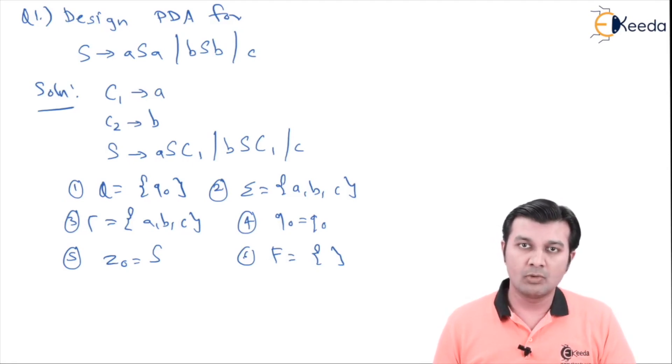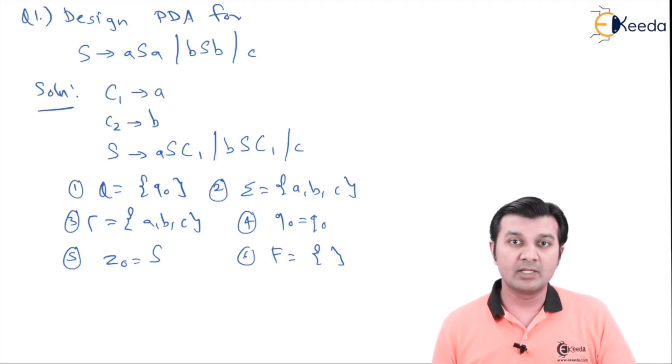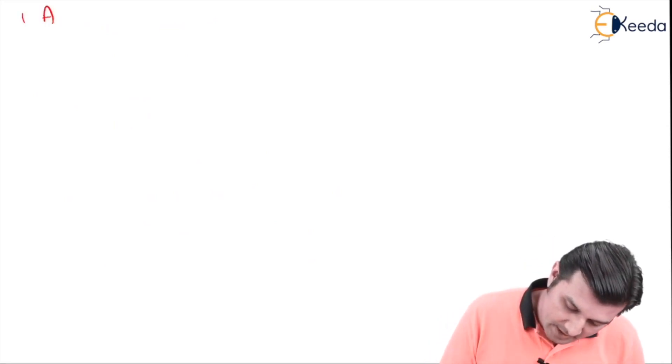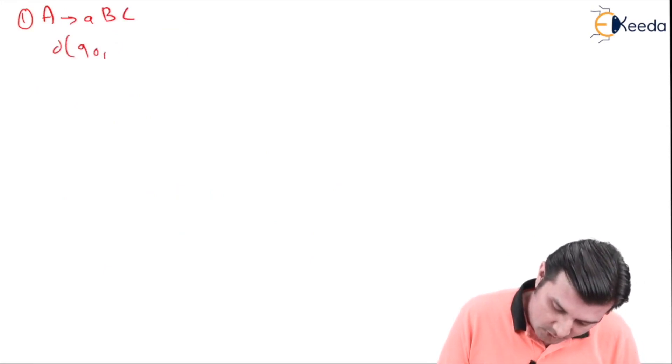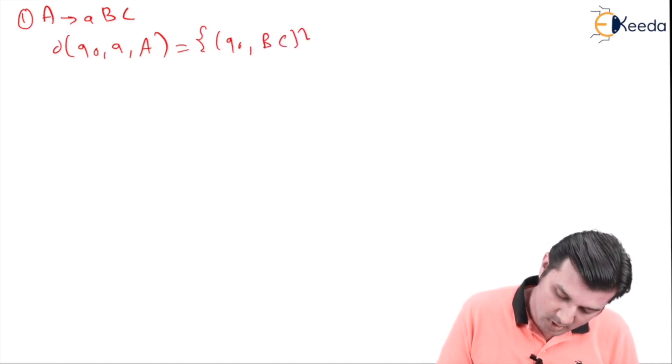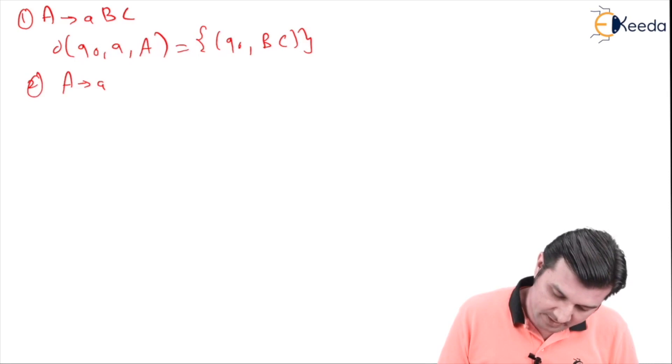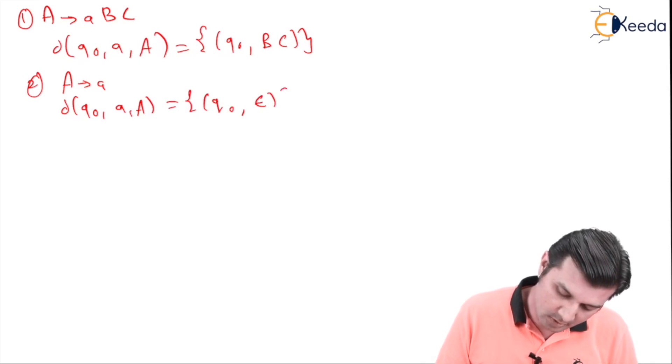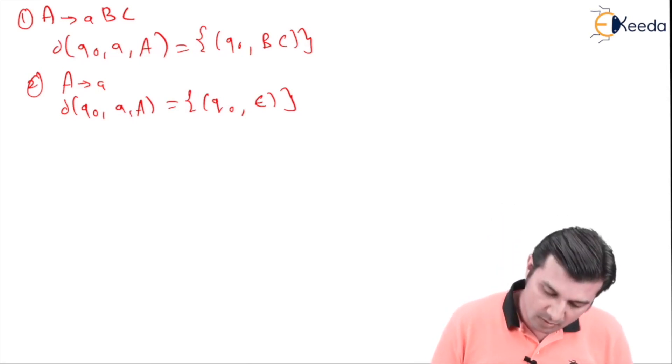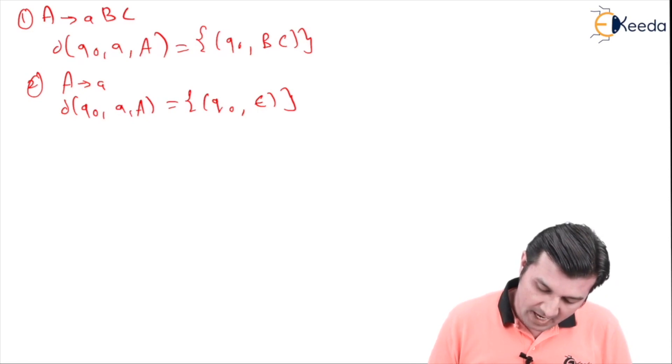So let's go ahead and solve the problem now. Before solving the problem, let me rewrite the rules. So we have the rules over here. Let me write it: A gives abc, we say del q0 a A equal to q0 bc. And for A gives small a, I say del q0 a A performs the pop operation q0 epsilon without changing the state.